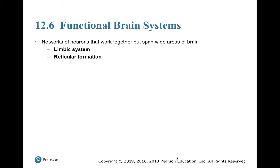We've been talking about specific structural regions and the brain functions associated with them. There are many different functional brain systems that aren't localized to one specific structure or area of the brain. These are networks of neurons that span wide areas of the brain. We're going to look at two of them: the limbic system and the reticular formation.